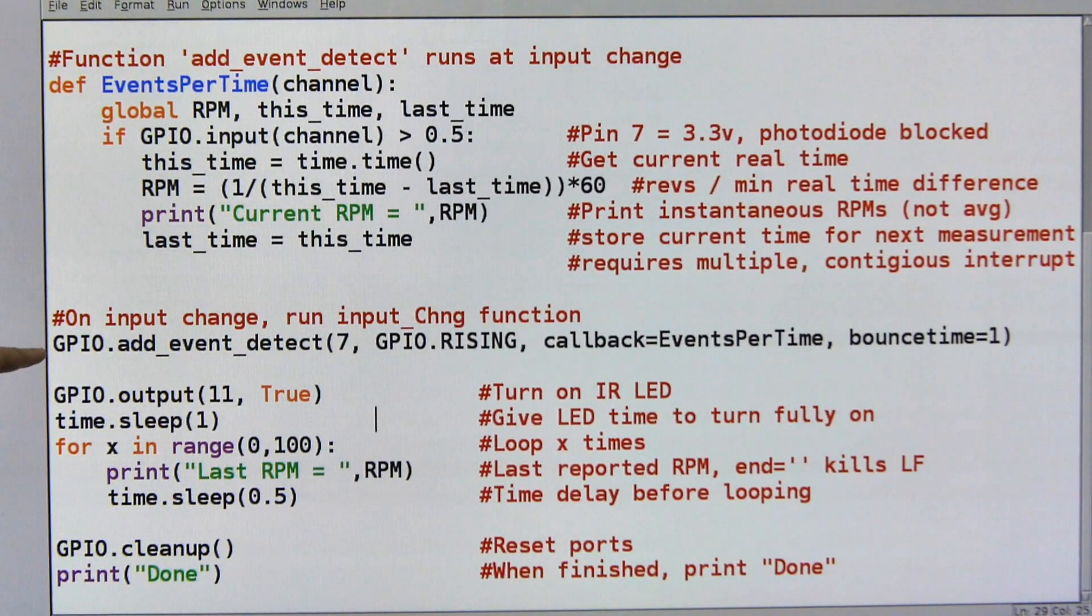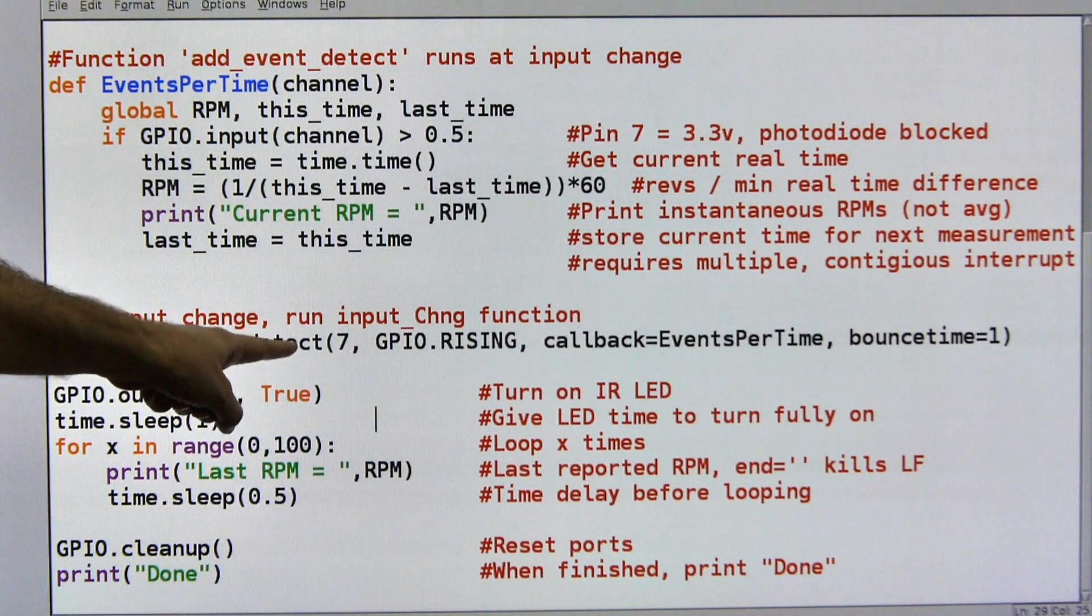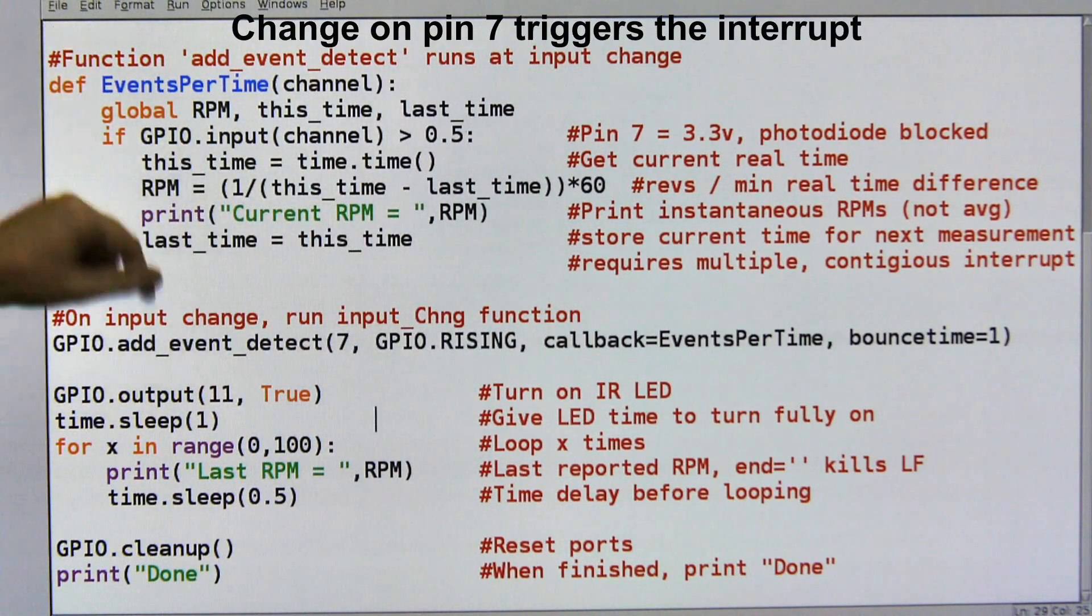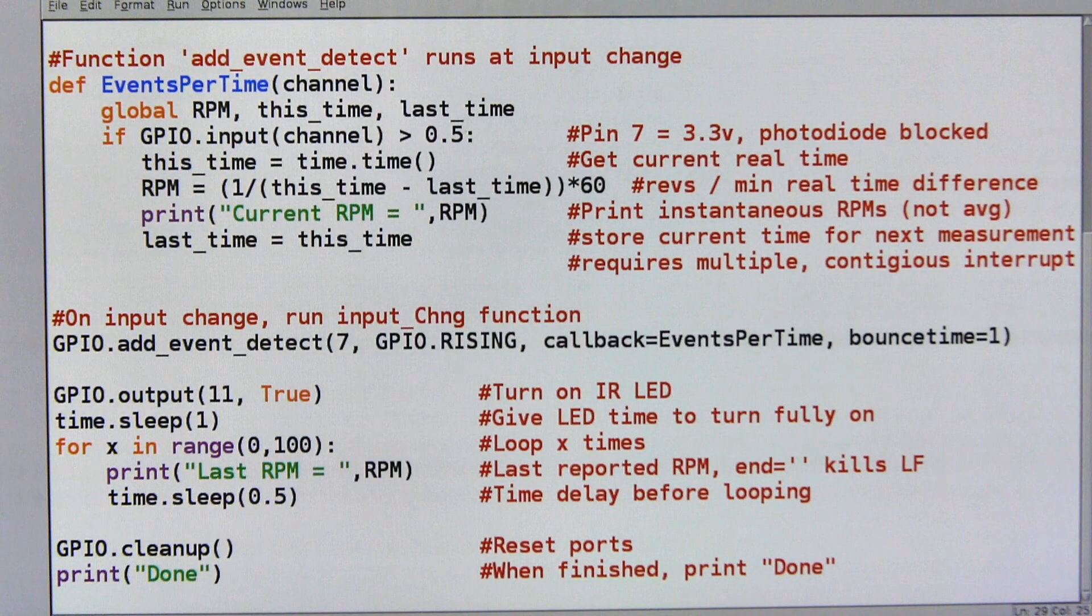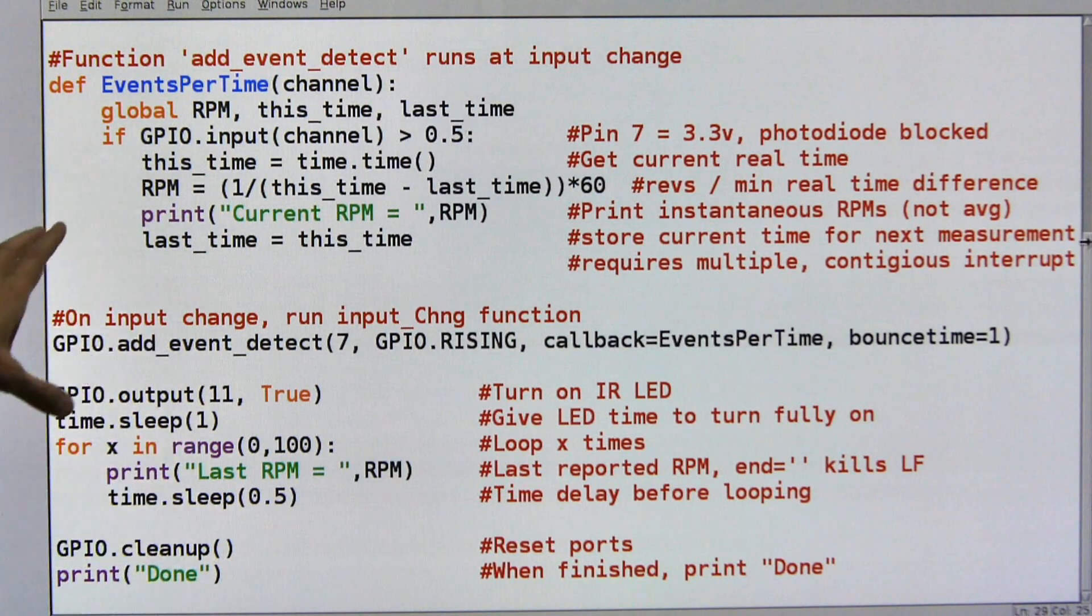On down here, we have the event detect, this is the interrupt, pin 7 is what it is. The callback this time is this routine up here and the bounce time I shortened in order to try to get a faster response out of it. I'm only getting about 600, 700 RPM reliably, I think I can do a lot better than that. I may have a hardware issue and I've got to work on that one too, but anyways just some experimentation.